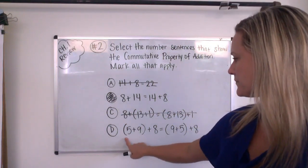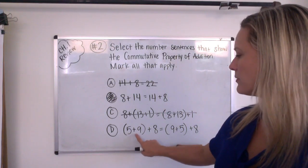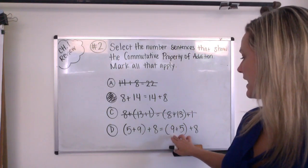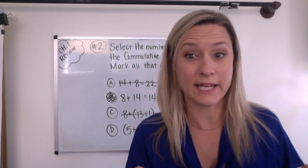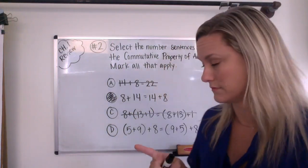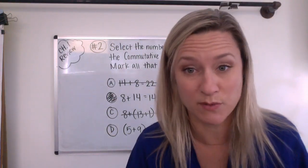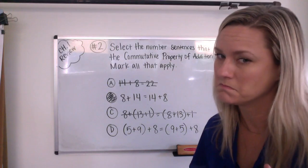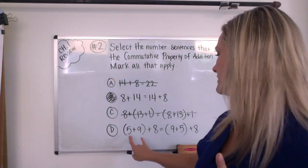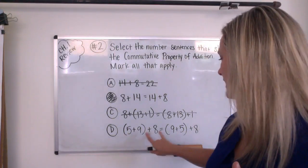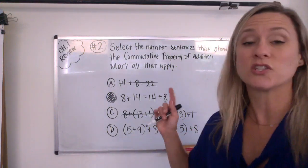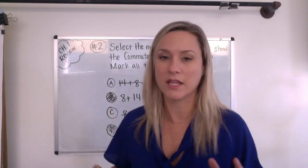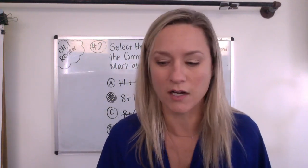And now I'm going to look at this one. 5 plus 9 plus 8 is the same as 9 plus 5 plus 8. Okay, did anything move in that one? Did any numbers move in that one? Yes. Which numbers moved? Yep. The 5 and the 9 were in the beginning, or 5 was in the beginning, then 9, and then they swapped.